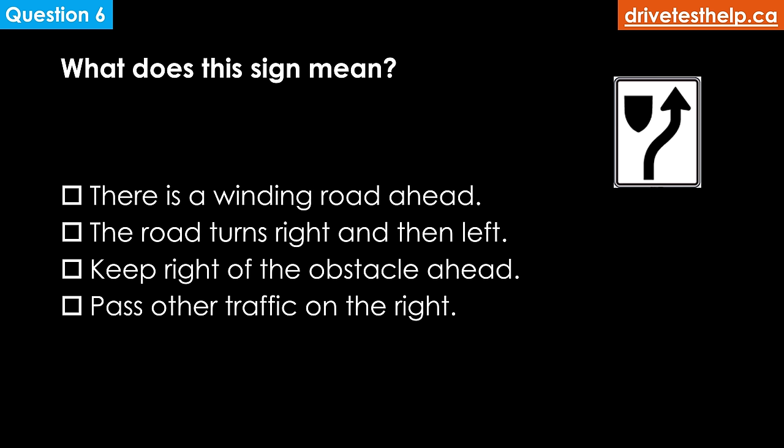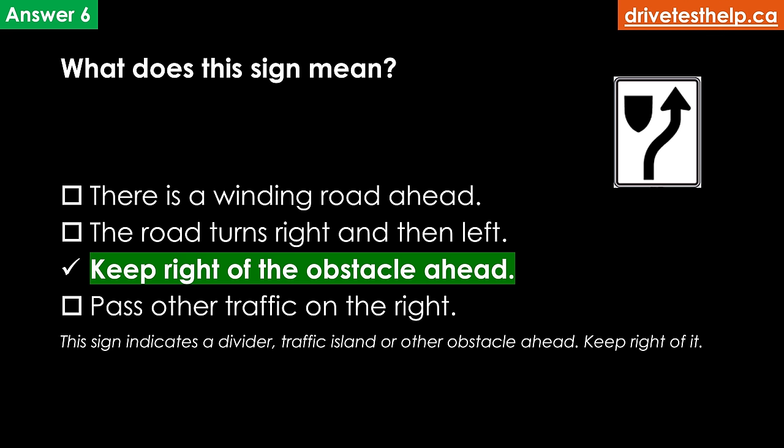What does this sign mean? Options: there is a winding road ahead; the road turns right and then left; keep right of the obstacle ahead; pass other traffic on the right. The correct answer is keep right of the obstacle ahead. This sign indicates a divider, traffic island or other obstacle ahead — keep right of it.